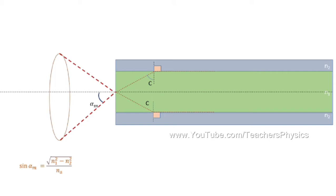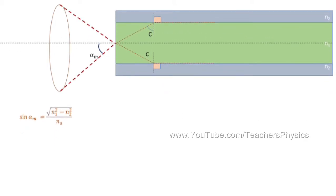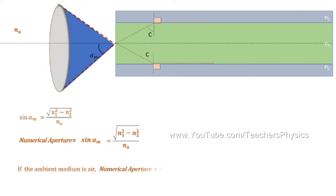Where Na is the refractive index of the ambient medium, and N1 and N2 are the refractive indices of the core and cladding respectively. The numerical aperture is given by the sine of the acceptance angle. If the ambient medium is air, Na = 1, and hence the numerical aperture is sqrt(N1² − N2²).